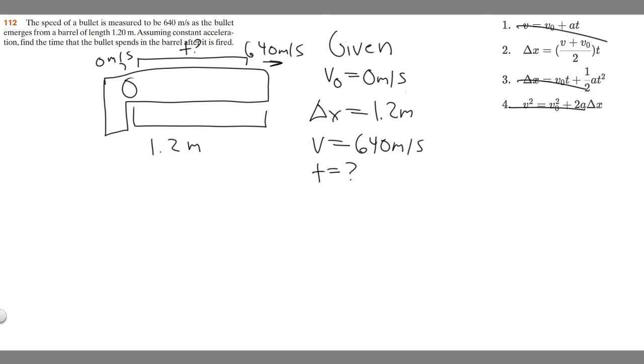So if we look at the only one left, it's going to be this one. So delta x equals v plus v sub 0 divided by 2 times t. So essentially, all I have to do, plug in our variables, solve for t, and that's going to be our answer.